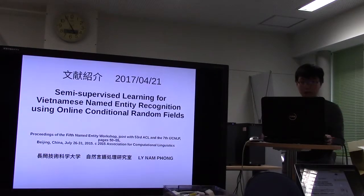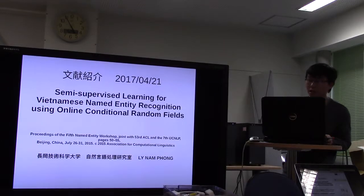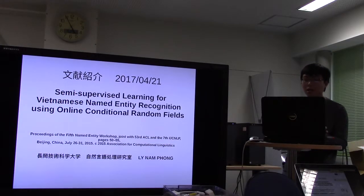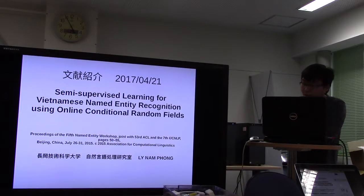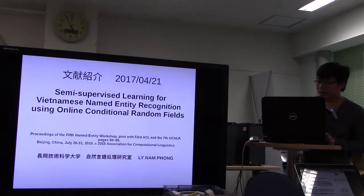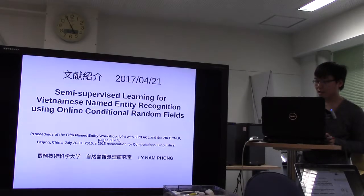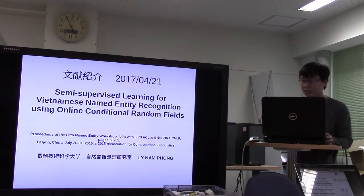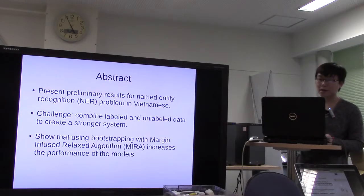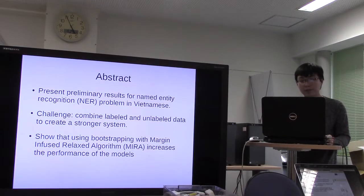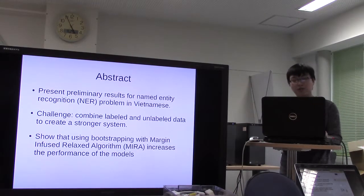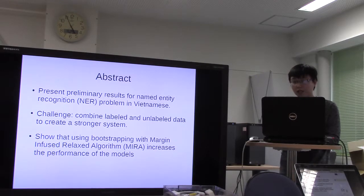Today I'm going to introduce the paper about semi-supervised learning for Vietnamese named entity recognition using online conditional random fields. This paper was presented at the fifth named entity workshop, joint with the ACL and the IJCNLP at Beijing, China in 2015. This paper presents preliminary resources for the named entity recognition problem in Vietnamese.